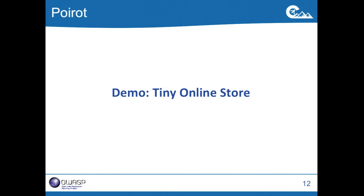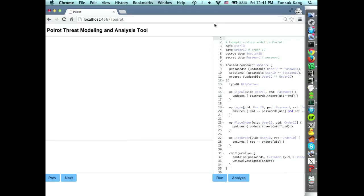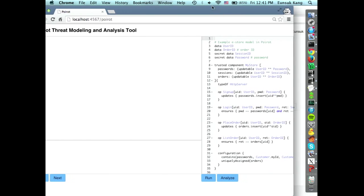At this point I'm going to give you a small demo of Poro. I'm going to use Poro to build a model of a tiny online store that provides four basic functionalities: creating an account, logging in, placing an order, and listing the set of orders you have made. I'll show you how Poro can be used in an interactive fashion to discover potential attacks on the system. This is the web interface for Poro, and on the right-hand side of the screen is the model of the online store written in Poro's input language.